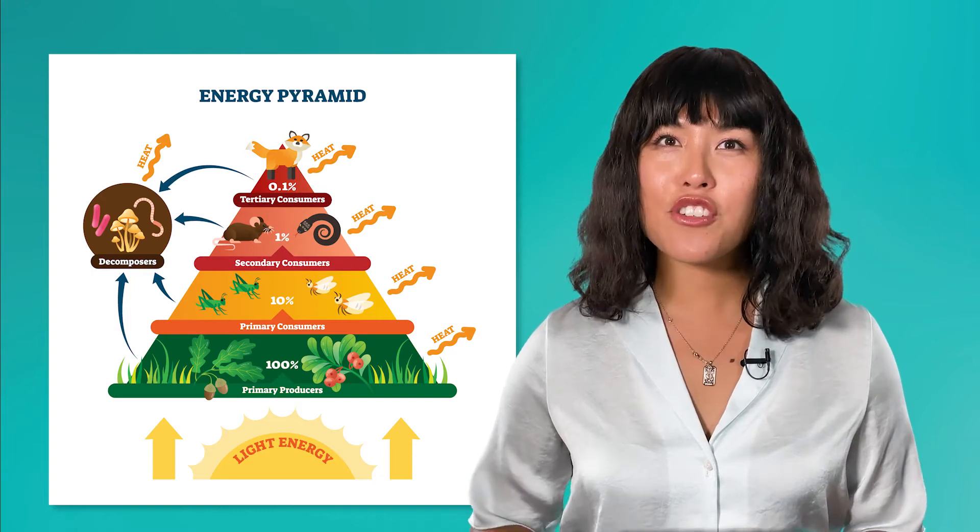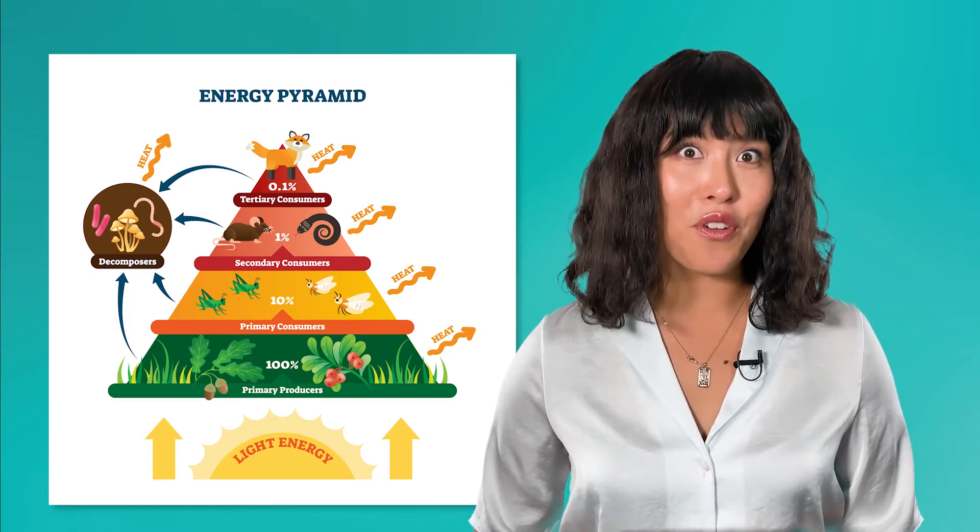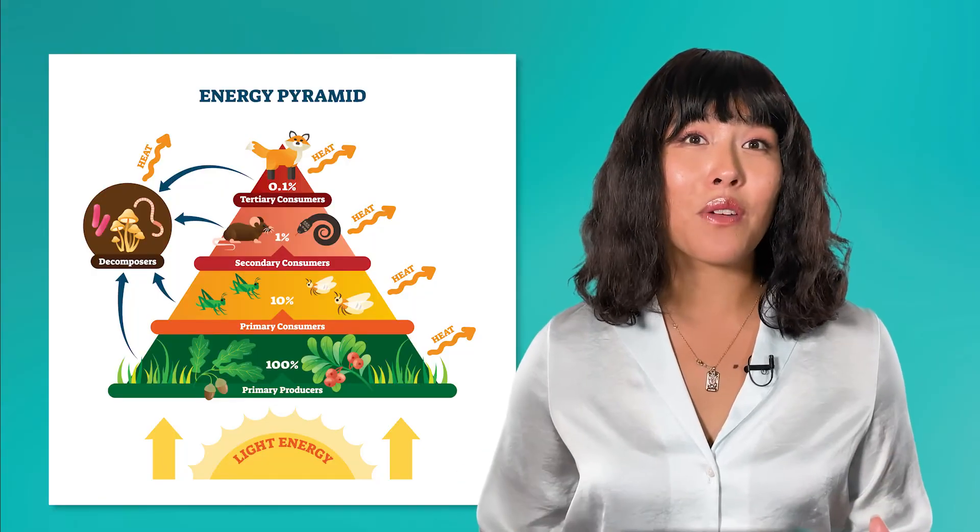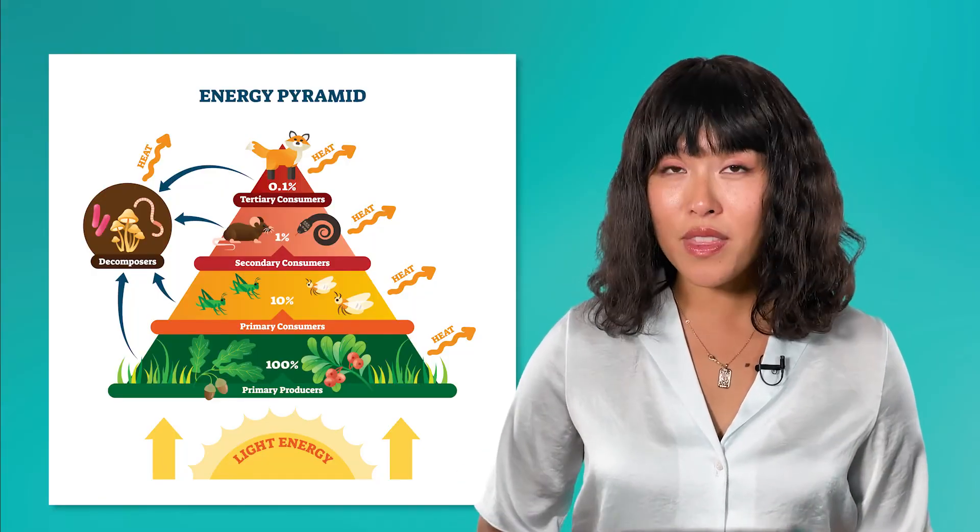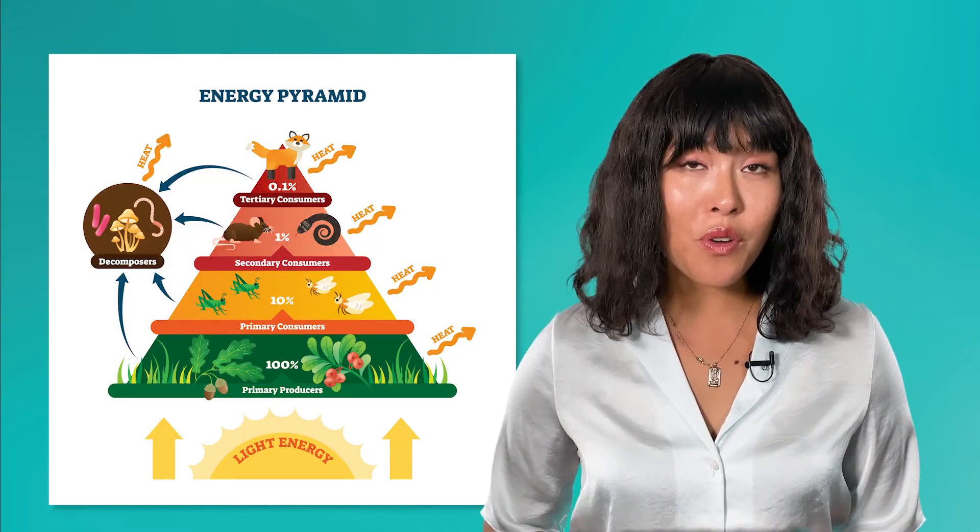This 10% is passed on to whatever organism eats it. This lower energy availability means there are fewer organisms at that energy level because there is a limited amount of energy available to support them. This system is called an energy or trophic pyramid.